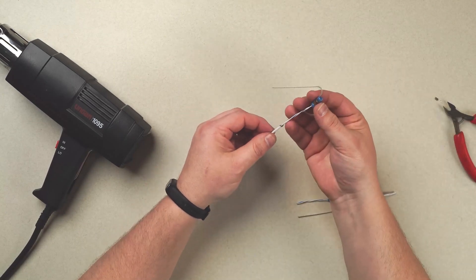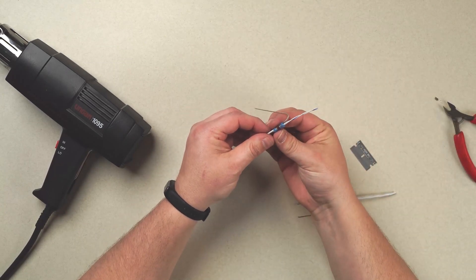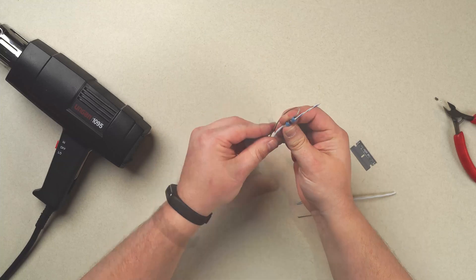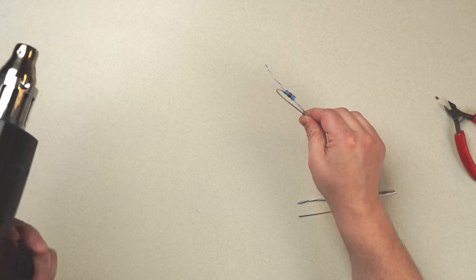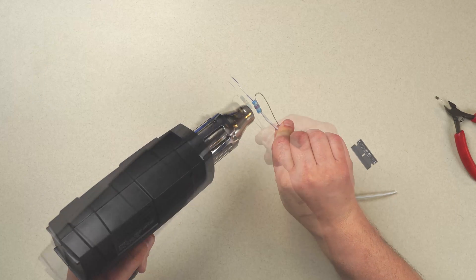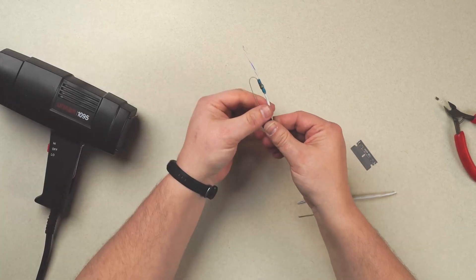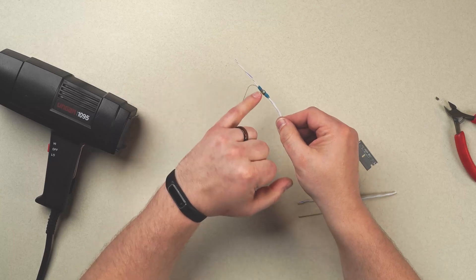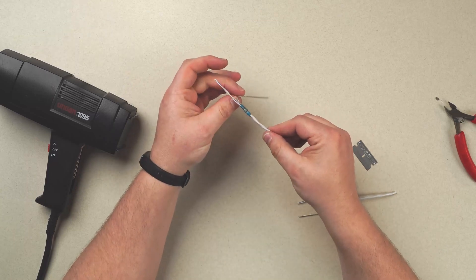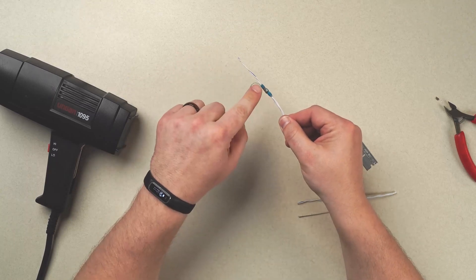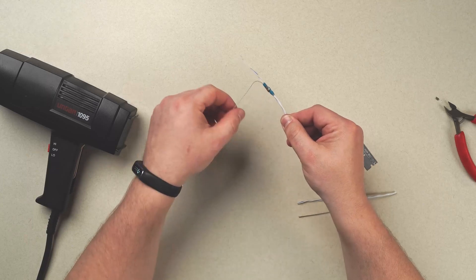And then, install our solder sleeve. Notice I kept the heat applied until the red stripe went completely silver. And we can see that either end of the environmental splice is completely melted.